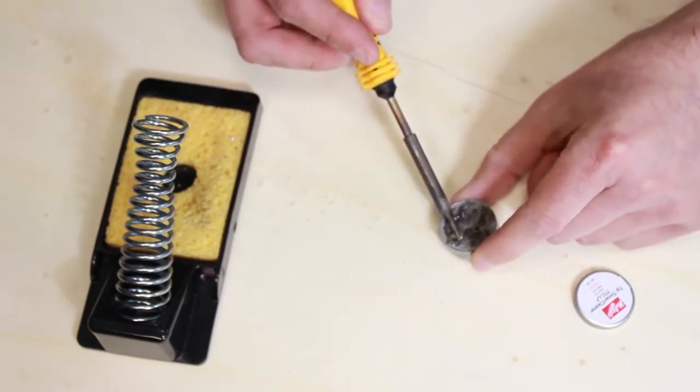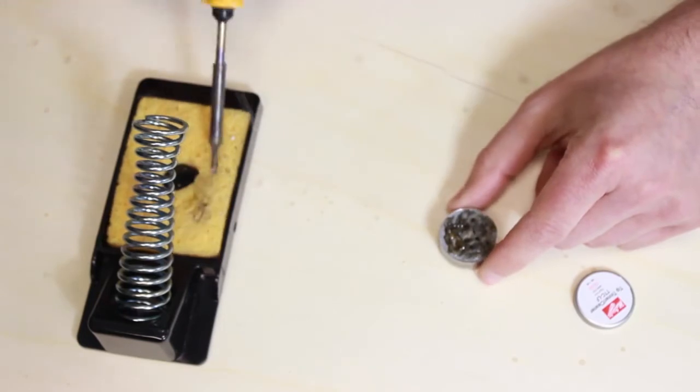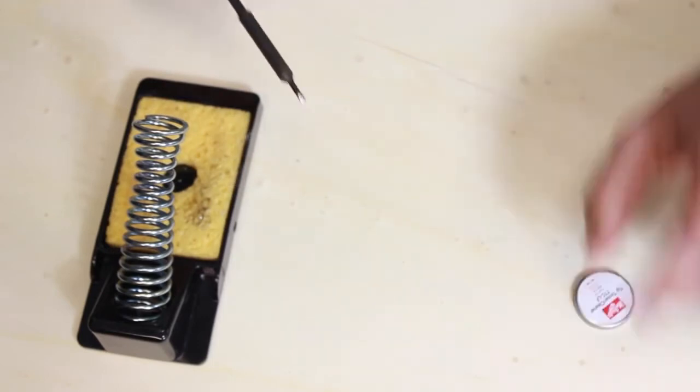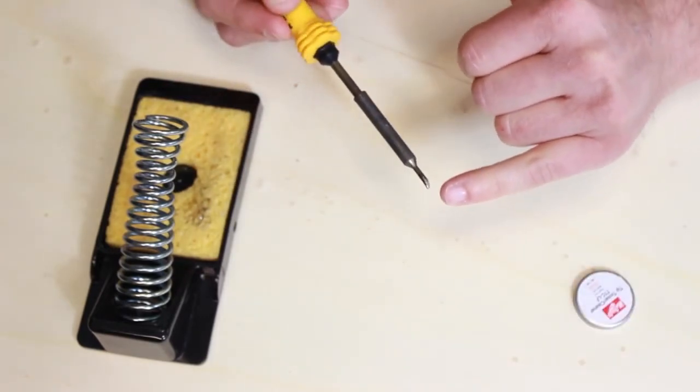So if we run the soldering iron through this, and then wipe it through the sponge, it helps remove any of this black material. You can see it's already starting to come off around the outside bits.